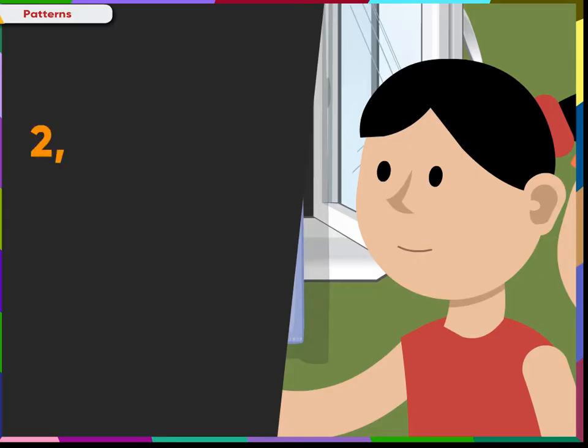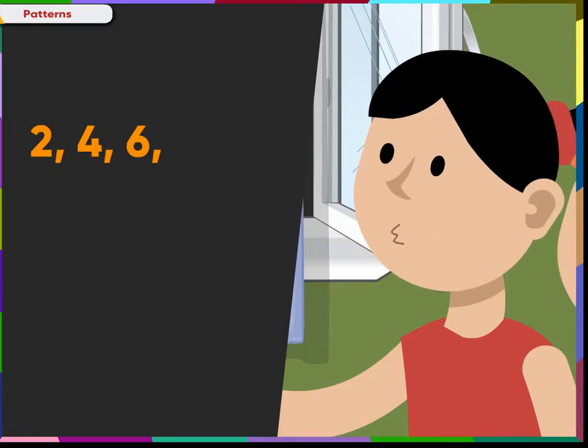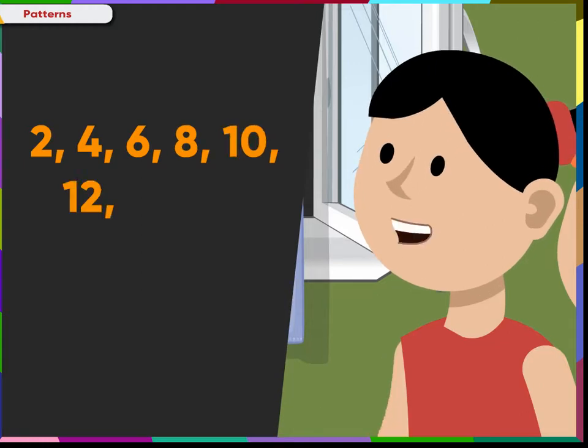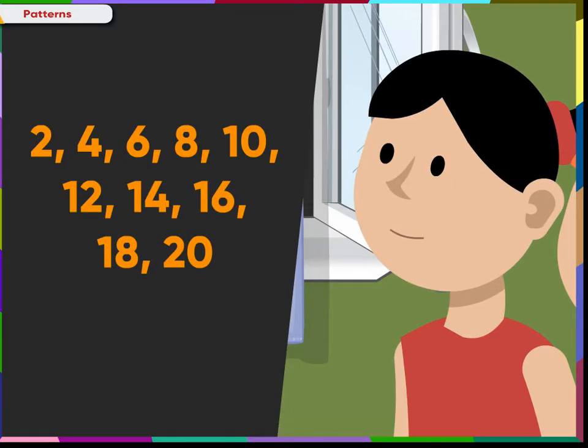Look at this pattern. Two, Four, Six. Continue this pattern till twenty. These are even numbers. So, the pattern is Eight, Ten, Twelve, Fourteen, Sixteen, Eighteen, Twenty. Very good!